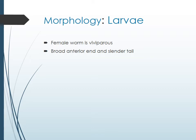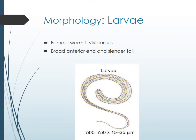The other morphological form is the larva. Unlike intestinal nematodes, you will not find eggs here because this worm is viviparous — it gives birth to larvae directly. The larva has a typical shape: the anterior part is thick with a very slender tail. It is much smaller than the adult worm, measuring 500 to 750 micrometers in size.